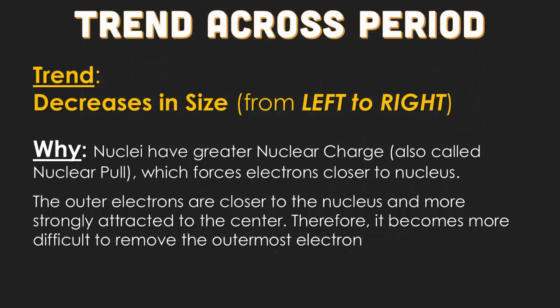The trend for the atomic radius is that all atoms will decrease in size as you go from the left hand side to the right hand side, from group 1 to group 18. The reason is that nuclei have greater nuclear charges, also called the nuclear pull, which forces the electrons closer to the nucleus. The outer electrons are closer to the nucleus and more strongly attracted to the center. Therefore it becomes more difficult to remove the outermost electron, which causes them to shrink in size.